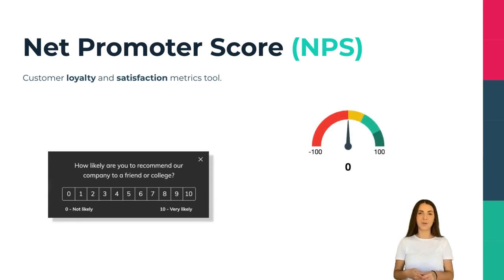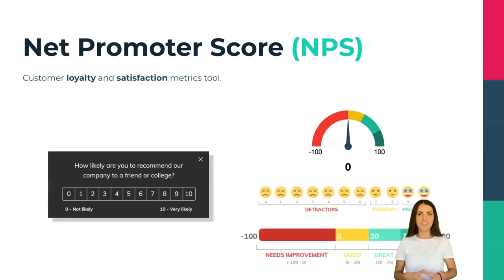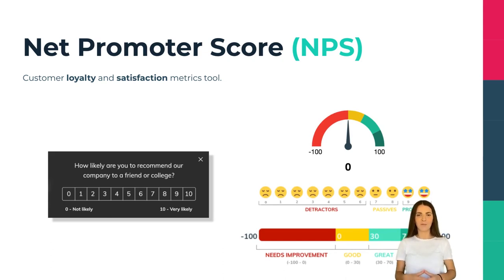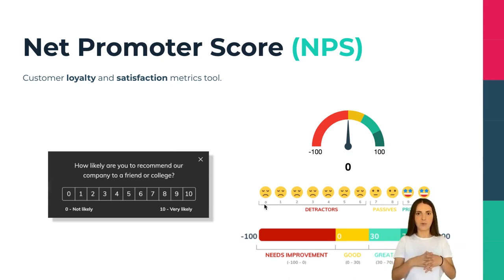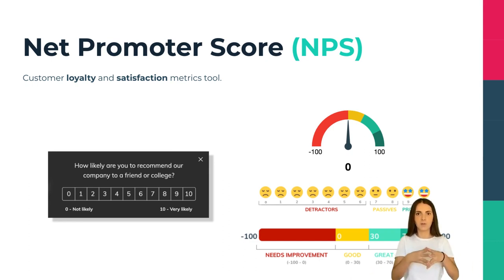The results divide the customers into three types — promoters, passives, and detractors — based on the direct relation between the customer's answers to the survey and their behavior. Customers who gave your product a 9 or 10 are the promoters. The ones who answered 7 or 8 are the passives, and the ones who answered 6 or below are the detractors. The NPS formula is measured by deducting the percentage of detractors from the percentage of promoters.